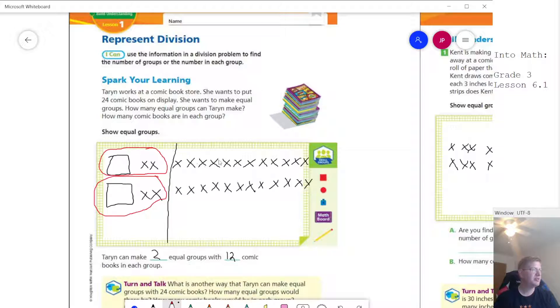We could also circle groups of 4. If I do that, I would be able to circle six equal groups, and I could replace those numbers standing for the number of groups or the number in each group. So we have a lot of different options.